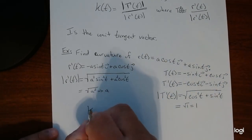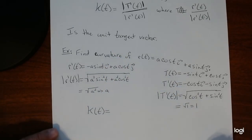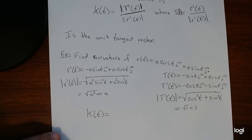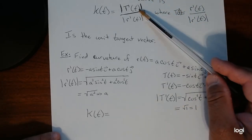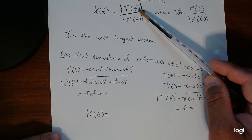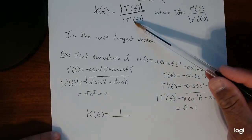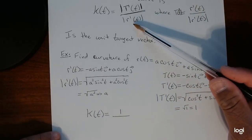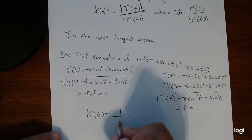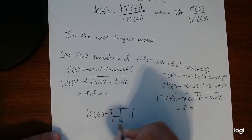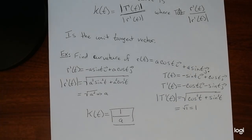Now finally, we can use the equation. The curvature of this curve is equal to the length of the derivative of the tangent vector, which is just one, divided by the length of the derivative of the vector, which is just a. So the curvature equals 1/a. That's how we use the derivative and its unit tangent derivative to find the curvature of the curve.